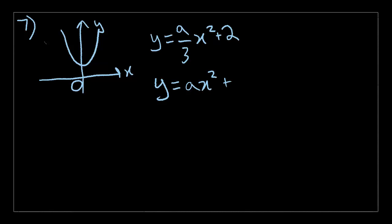Number 7. There's a parabola. We're going to draw that with the y-axis and x-axis. The graph above is a parabola whose equation is y equals ax squared plus 2, where a is a constant. If y equals a over 3x squared plus 2 is graphed on the same axis, which of the following best describes the resulting graph as compared with the graph above?